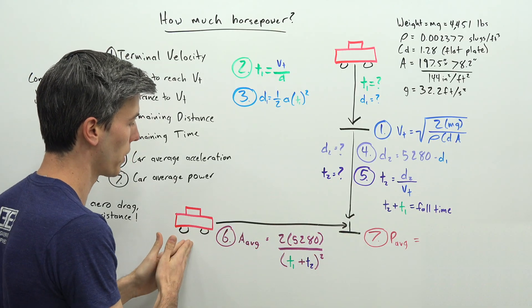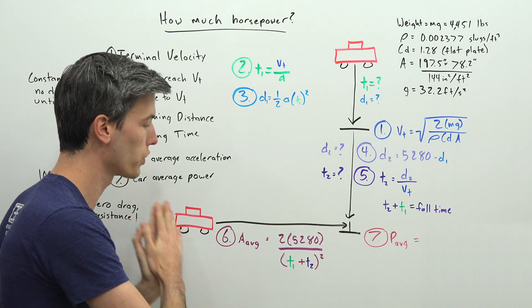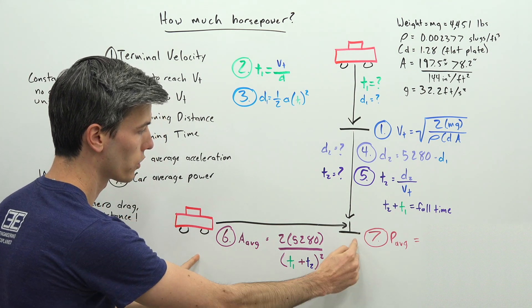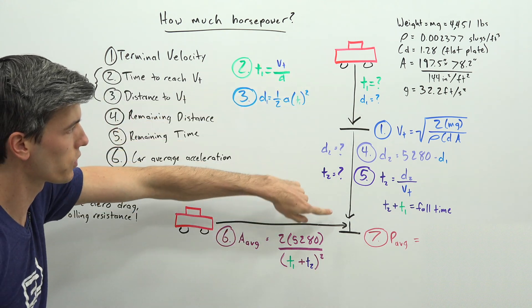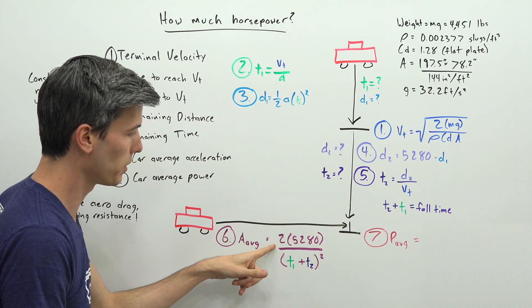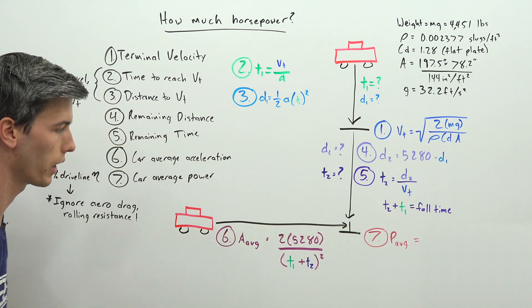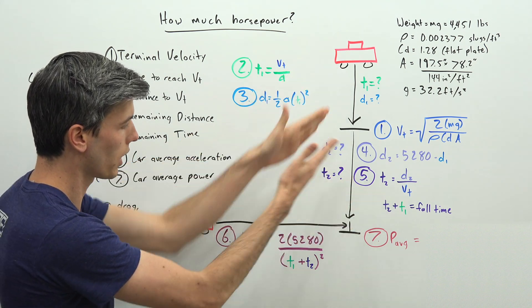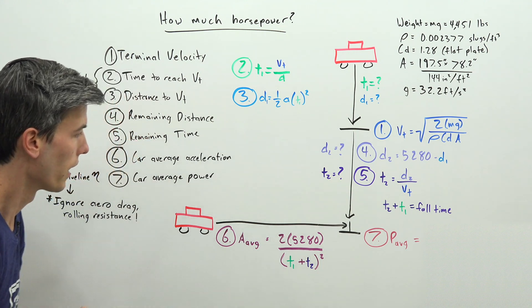And from that we know how much total time it takes that car to fall. So that's going to give us our target for acceleration for our car on the ground. So it's average acceleration that it needs in order to travel that distance and the amount of time it took for that car to fall is going to be 2 multiplied by the distance 1 mile 5,280 feet divided by our 2 times added together squared.